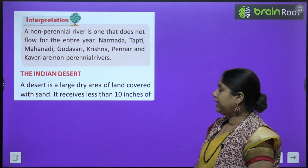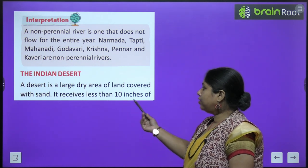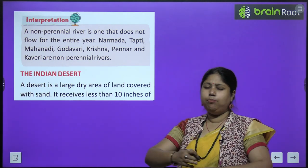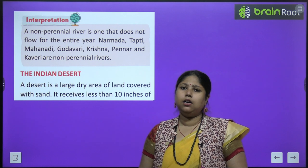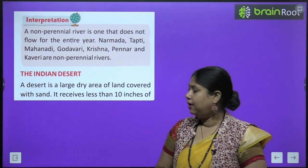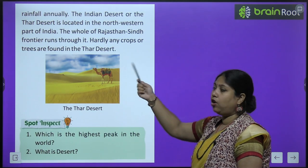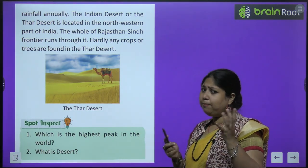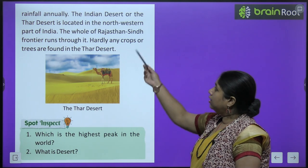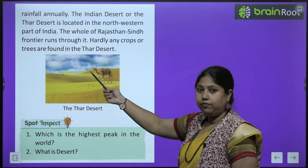Ab hum padhenge Indian desert ke baare mein. A desert is a large dry area of land covered with sand — yaani ek bahut bada area land ka jo ret se covered hai, jahaan pe sirf mitti hi mitti hai. It receives less than 10 inches of rainfall annually — bahut kam, naam matra barish aisi jagah pe hoti hai. The Indian desert or the Thar desert is located in the north-western part of India.